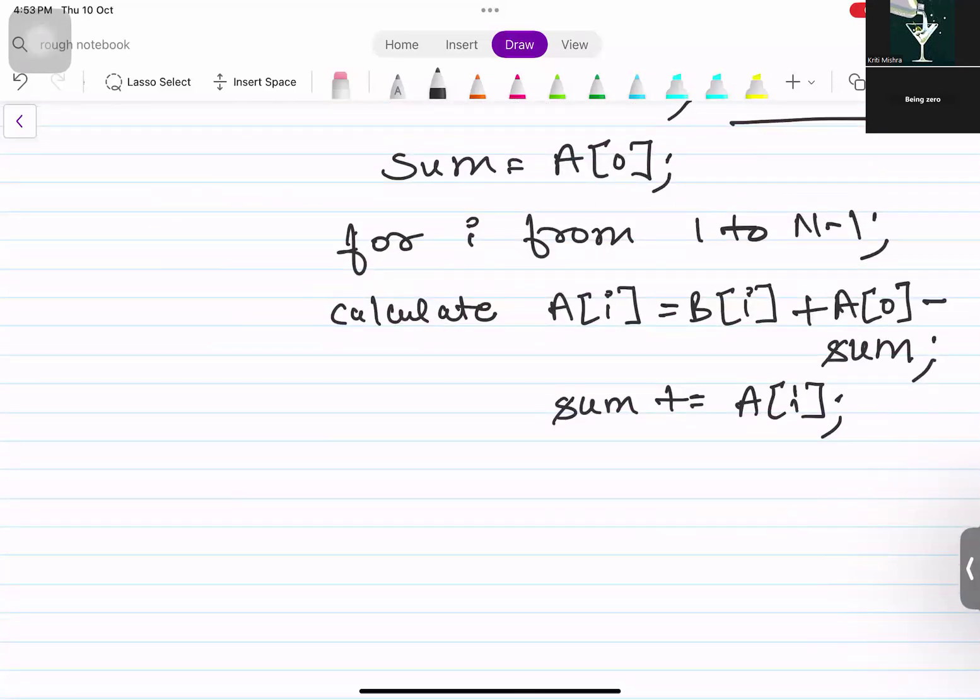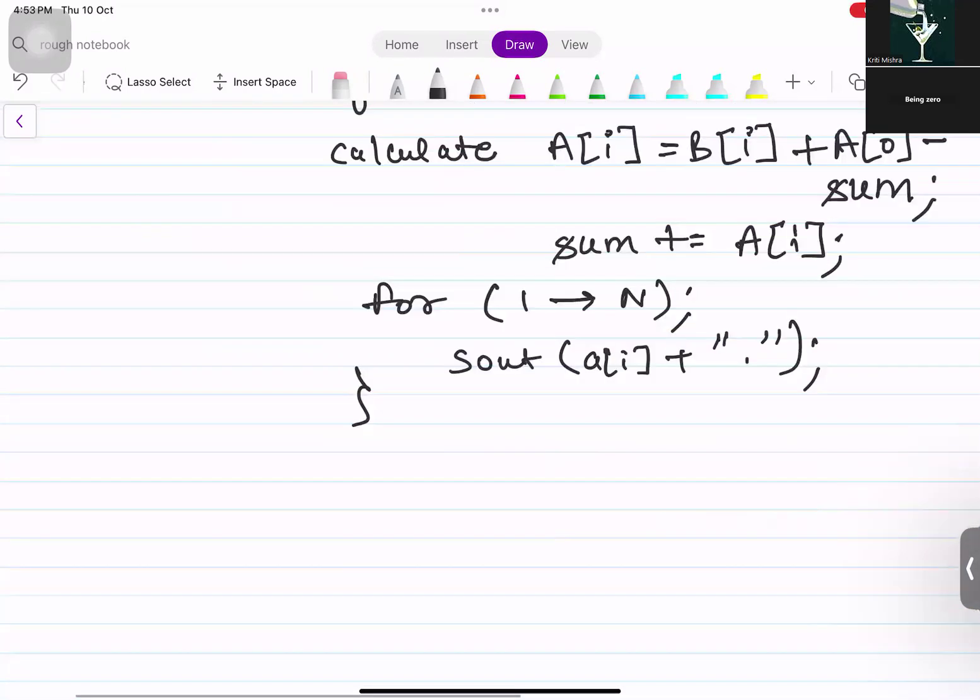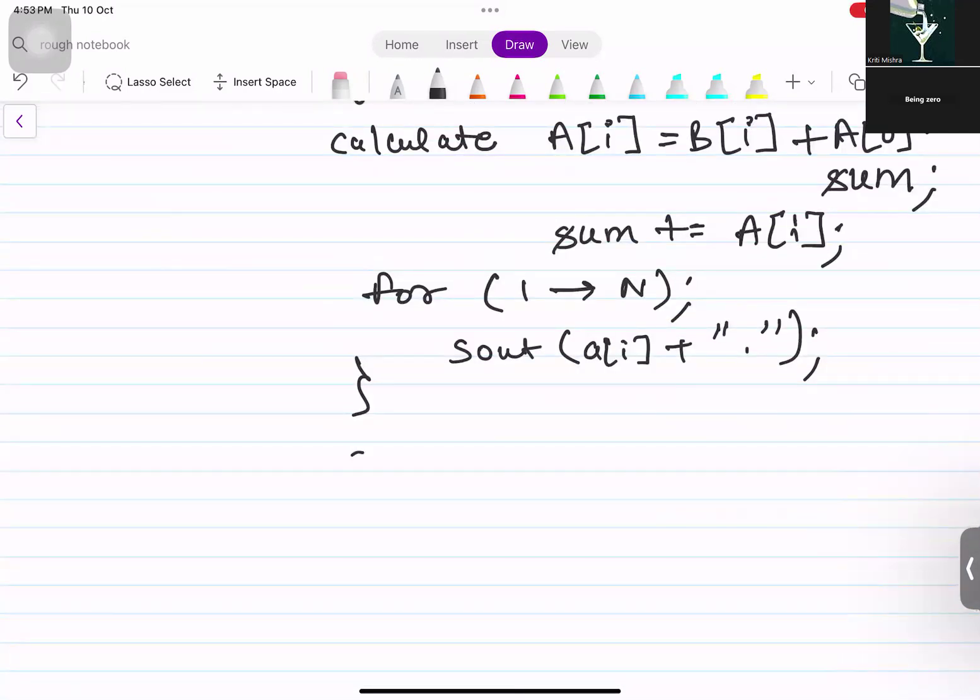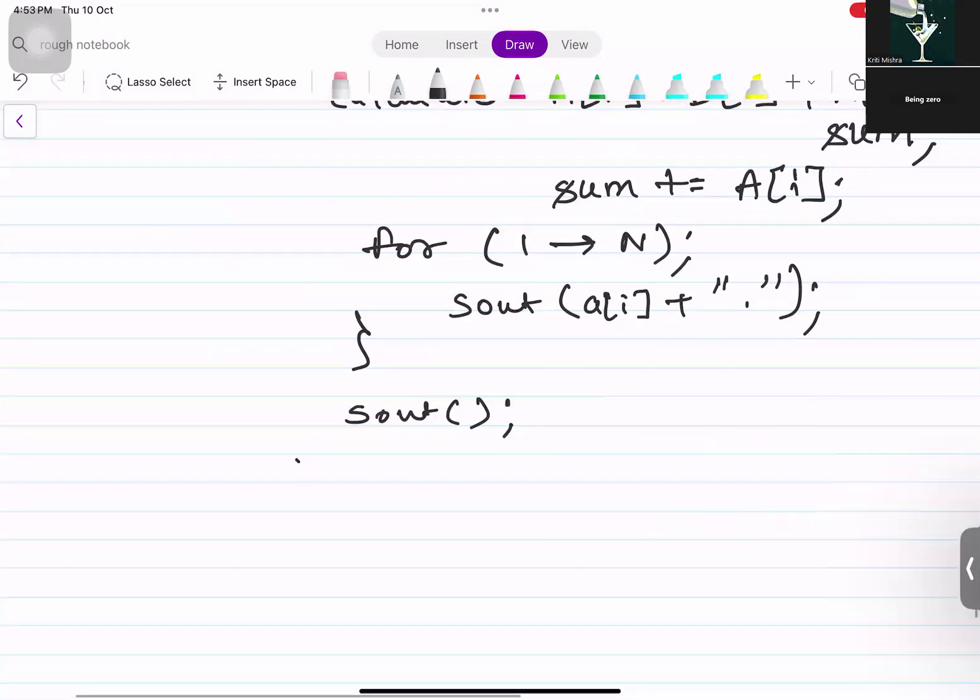Lastly, we need to print. So we can use for loop for that also. 1 to n, print all the elements of a of i. And then the question is given that they should be spaced separately. So add a space also. After finishing the whole iterations, you will also need to add a new line. Don't forget to add that. And then you are good to go.